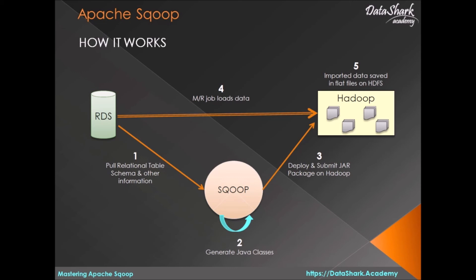After the job is finished, Hadoop will send a response back to the Sqoop CLI to be shown to the user. This is how Sqoop works internally. In the next lesson, we will see why Apache Sqoop is so important in the big data world.